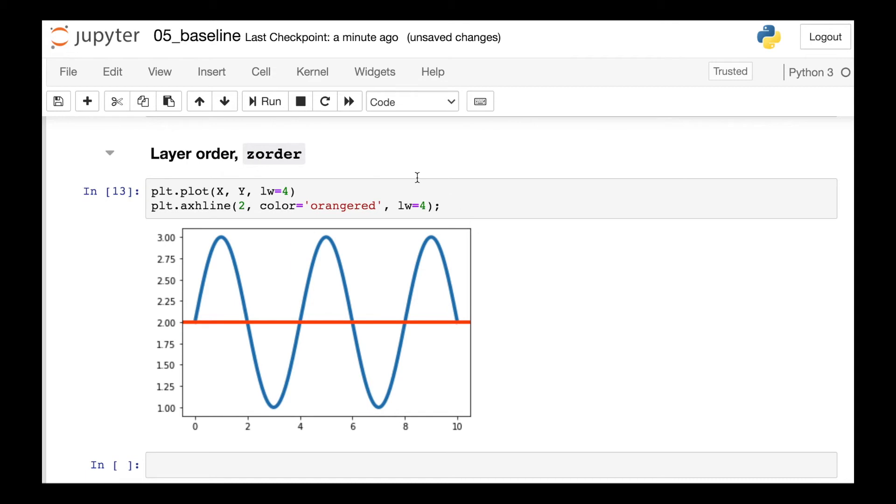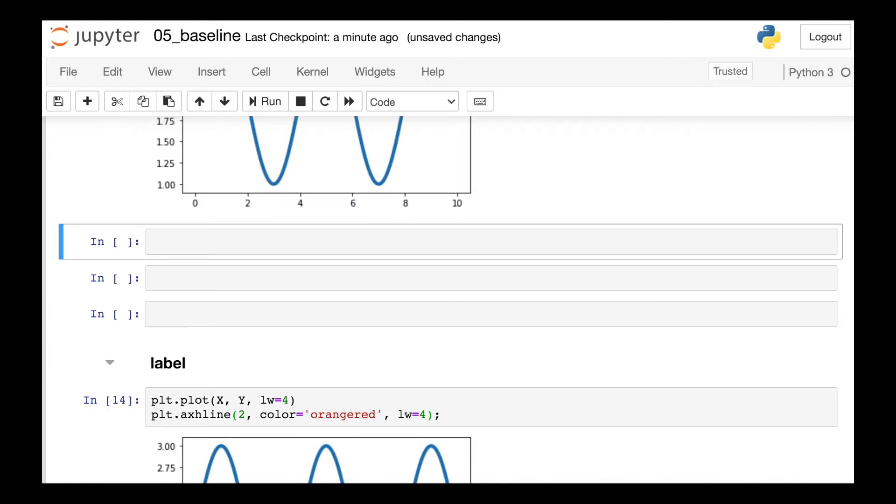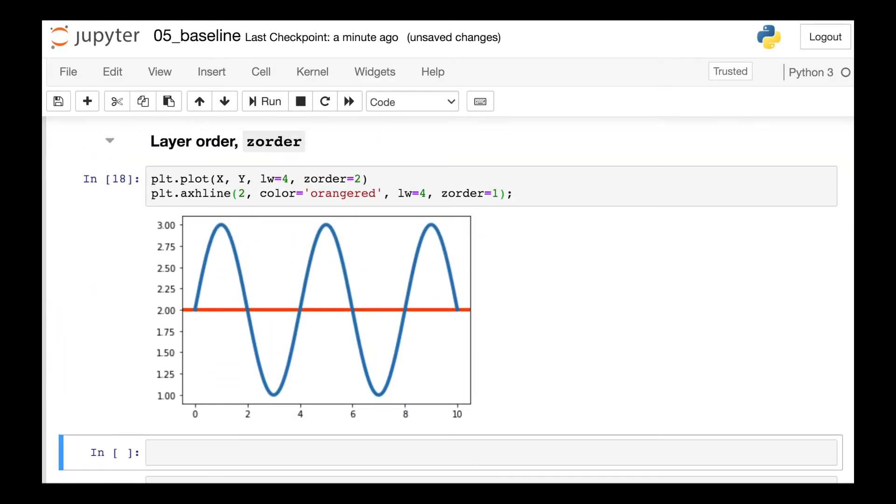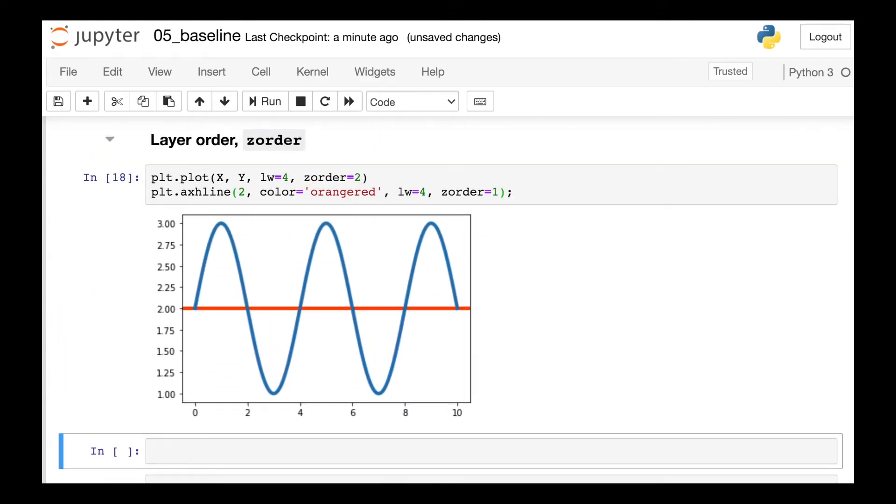So right now the default zorder value is 1 for both of these lines, but let's increase zorder to be 2 for our sine wave and continue setting zorder to be 1 for that baseline. Now you'll see that the sine wave has been plotted on top of the baseline. You can tell that because the blue line is now on top of the orange. So lines with smaller zorder values will appear toward the background and larger values will appear toward the foreground.